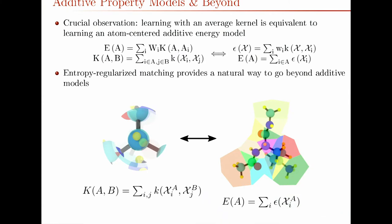A key observation is that if you separate this kernel into kernels between local environments and combine them additively — so the kernel between molecule A and molecule B is the sum of all pairs of kernels between every environment on A and every environment on B — then the property you predict, here the energy, is given by a sum of predicted properties for each of these individual local environments. You don't just have to add the kernels in this simple way; there are other ways, for example to maximize the entropy of a coefficient matrix to get the most information possible.